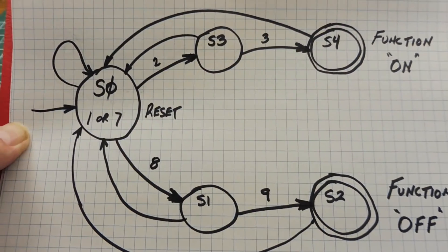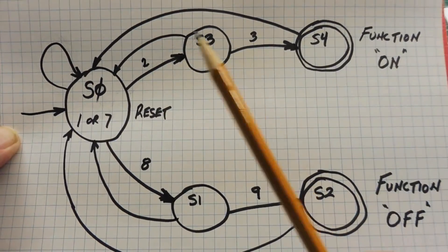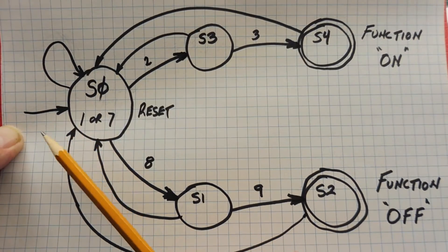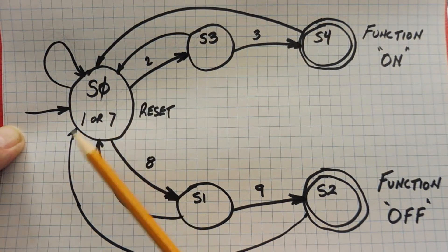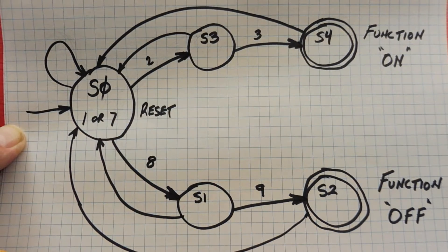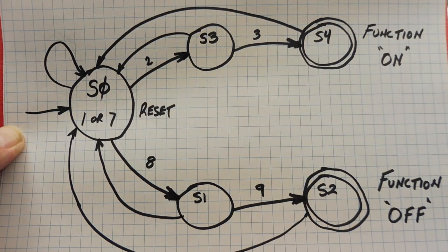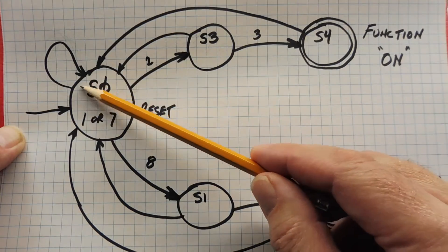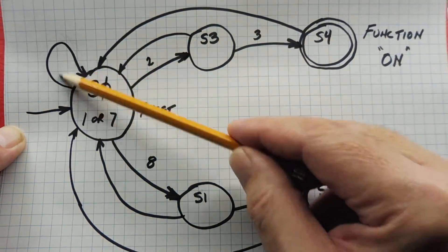We'll start at state 0, which is where our input enters the finite state machine. It's looking for a 1 or a 7 for the function on or function off sequence. If it doesn't get a 1 or a 7 — say it gets a 4, a 5, or a 6 — it will just reset itself.